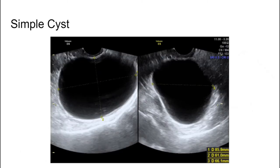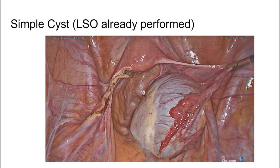Moving on to pathology — this is a simple ovarian cyst. They're called simple cysts because they're round, smooth, contain nothing but fluid — just black on scan. This one is quite large, about eight by six by six-and-a-half centimetres. At surgery, you can see the normal ovarian tissue stretched out with the cyst, and the fimbrial tube splayed over it. It looks benign — round, no signs of anything nasty — just a simple cyst.